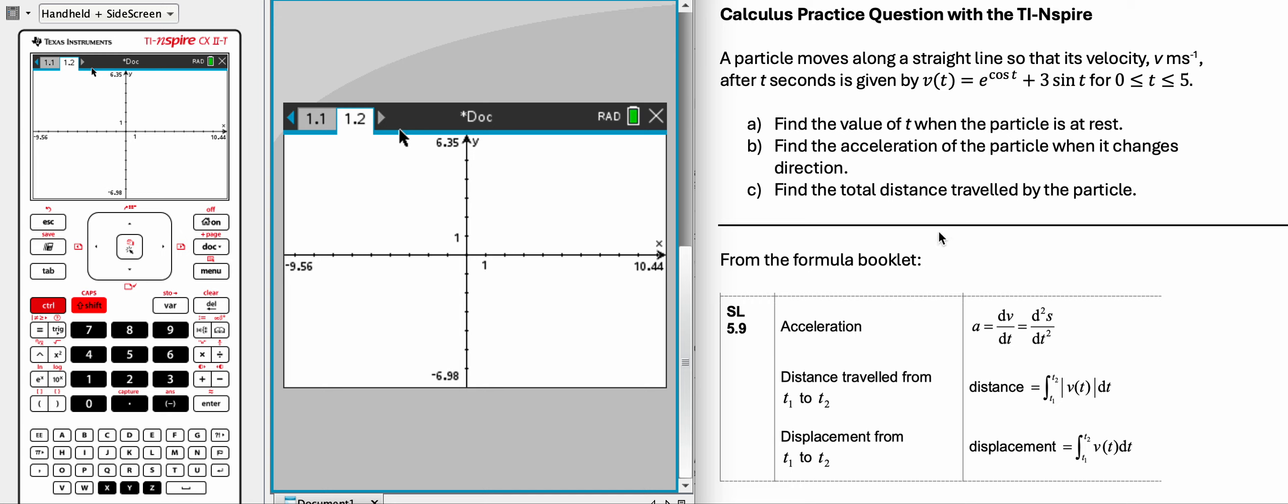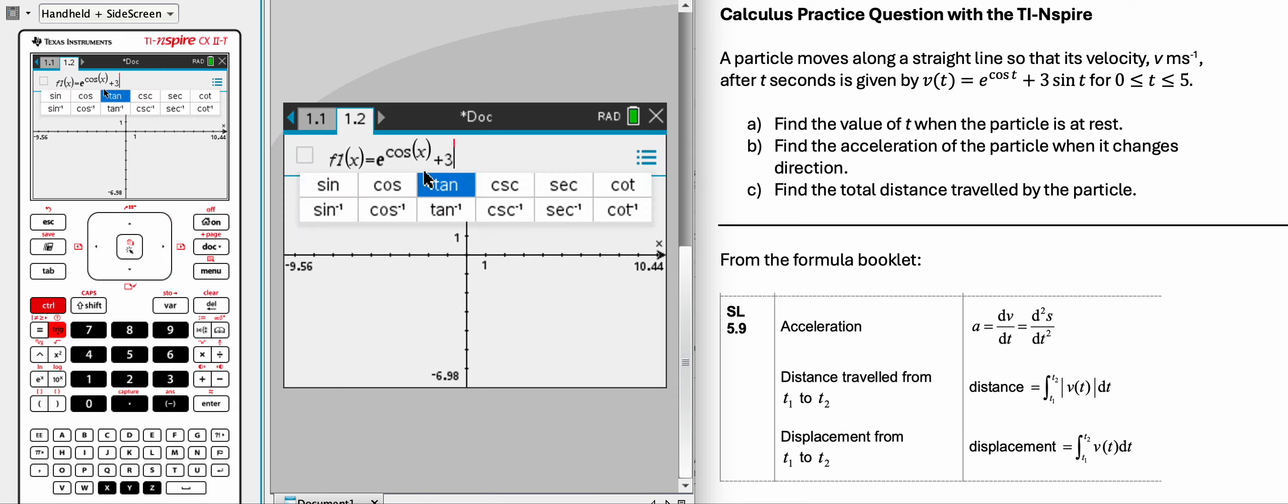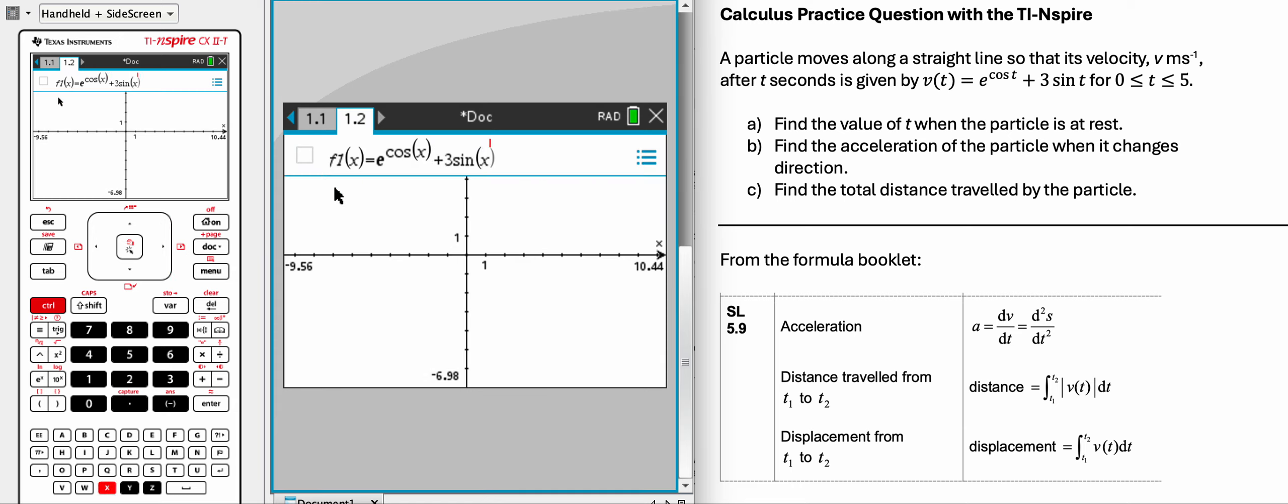So what we're going to do is, first of all, plot this function. Let's use this button, make sure that e is bold so it knows that it's referring to not a variable, but the constant, Euler's constant, and let's do cos x plus 3 sine x.